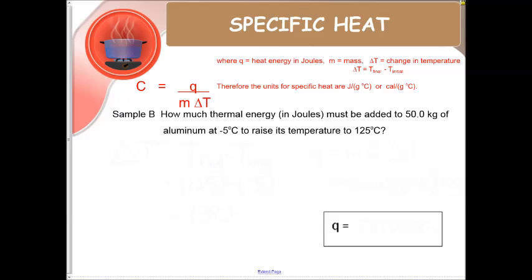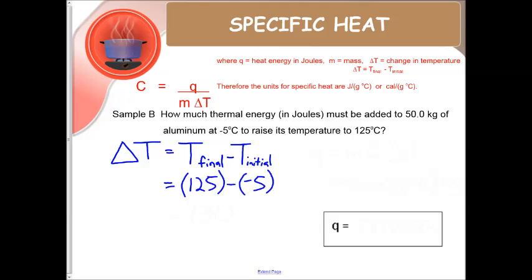Now first thing we need to do is figure out what our delta T is. Delta T is T final minus T initial. So that is 125 minus a negative 5. So that changes things. That's why we are going to make sure we have parentheses if we need them. Because that means our overall temperature change is 130.